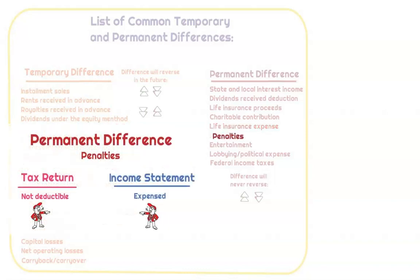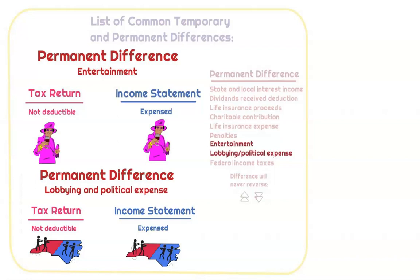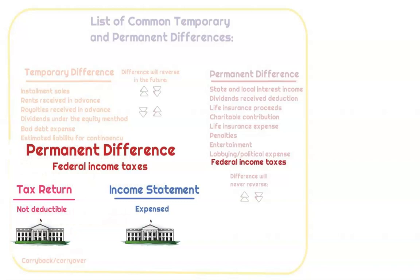Penalties and fines are never going to be deductible; however, we can take them as an expense in the financial statements. The same goes for entertainment, lobbying, and political expenses — not deductible on the tax return, but reported in the financial statements. Entertainment used to be deductible up to 50%, but that's no longer the case per TCJA. Federal income taxes are not going to be deductible, but we can take them as an expense on the income statement — that's going to be a permanent difference.